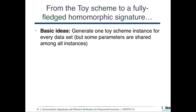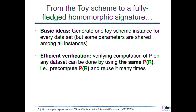To go from the toy scheme to a fully-fledged homomorphic signature, the idea is to generate one instance of the toy scheme for every data set, with some parameters shared among all instances to get efficient public keys. For efficient verification, if you want to verify the same program P on multiple data sets, the verification uses the same value P(R). If you precompute it once, you can use it to verify as many times as you want.